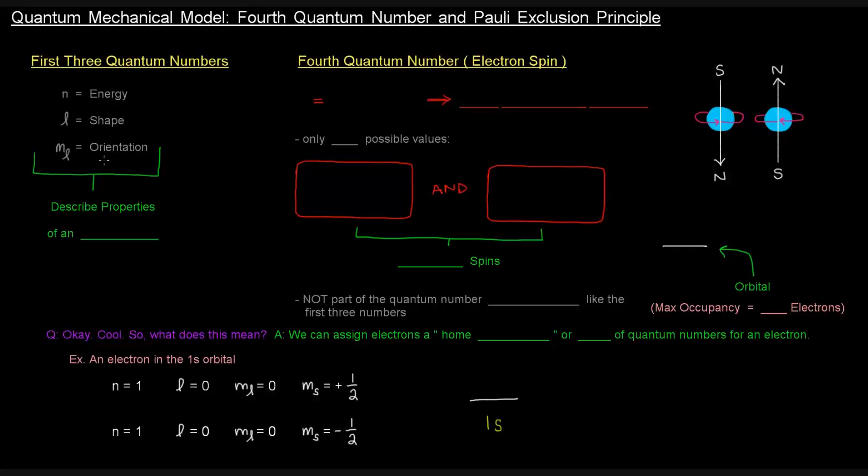Of what though? Those are all properties that describe an orbital, an atomic orbital, where we say that electrons can be located.